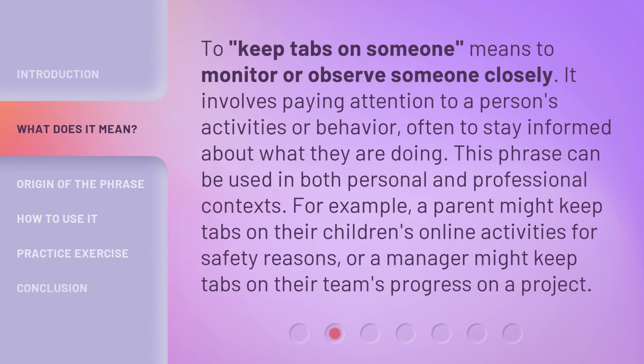To keep tabs on someone means to monitor or observe someone closely. It involves paying attention to a person's activities or behavior, often to stay informed about what they are doing. This phrase can be used in both personal and professional contexts. For example, a parent might keep tabs on their children's online activities for safety reasons, or a manager might keep tabs on their team's progress on a project.